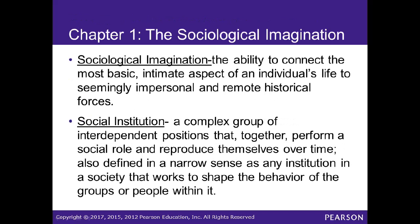The sociological imagination is the ability to connect the most basic, intimate aspects of an individual's life to seemingly impersonal and remote historical forces. A social institution is a complex group of interdependent positions that together perform a social role and reproduce themselves over time. In a narrower sense, it is any institution in a society that works to shape the behavior of the groups or people within it.